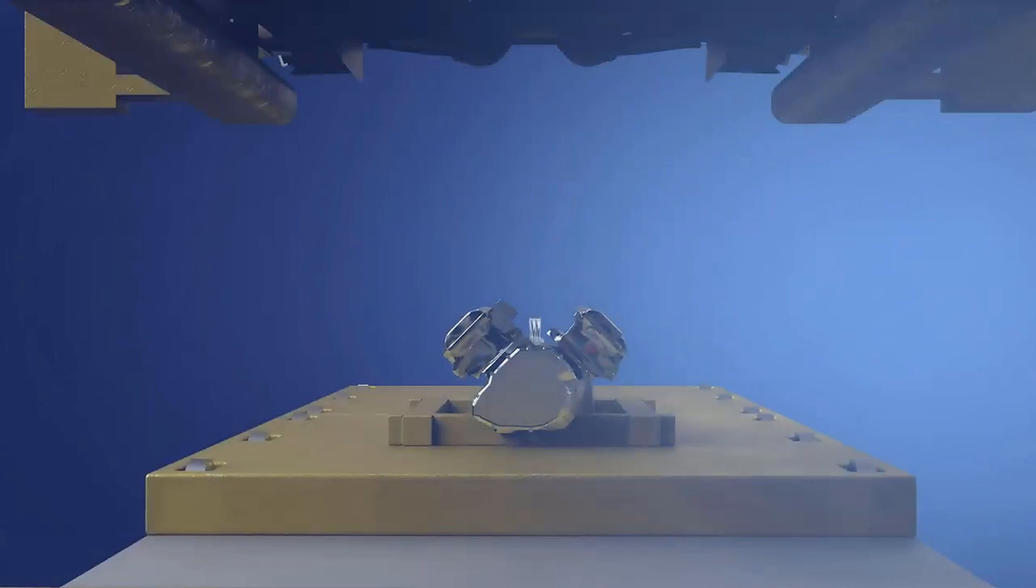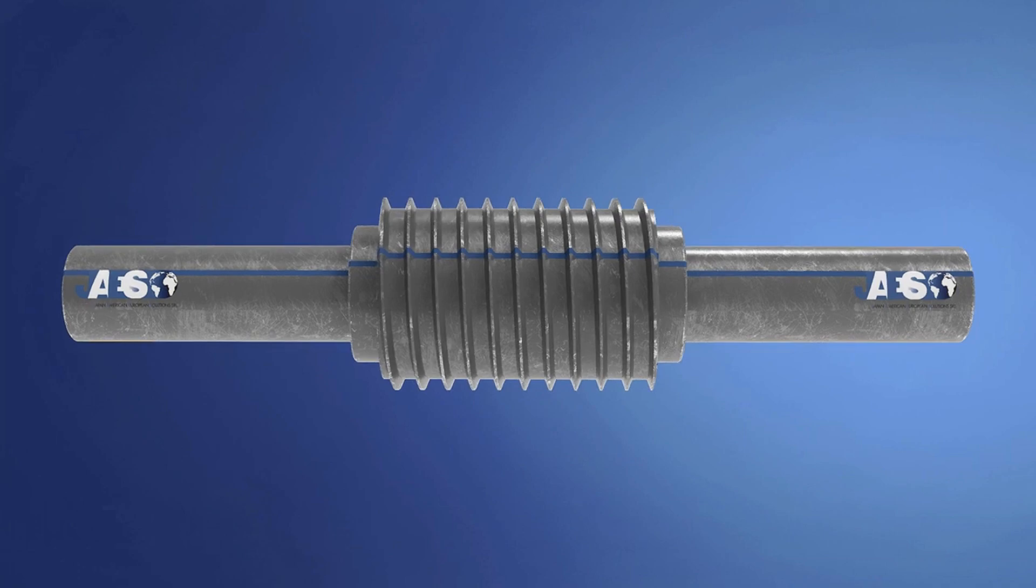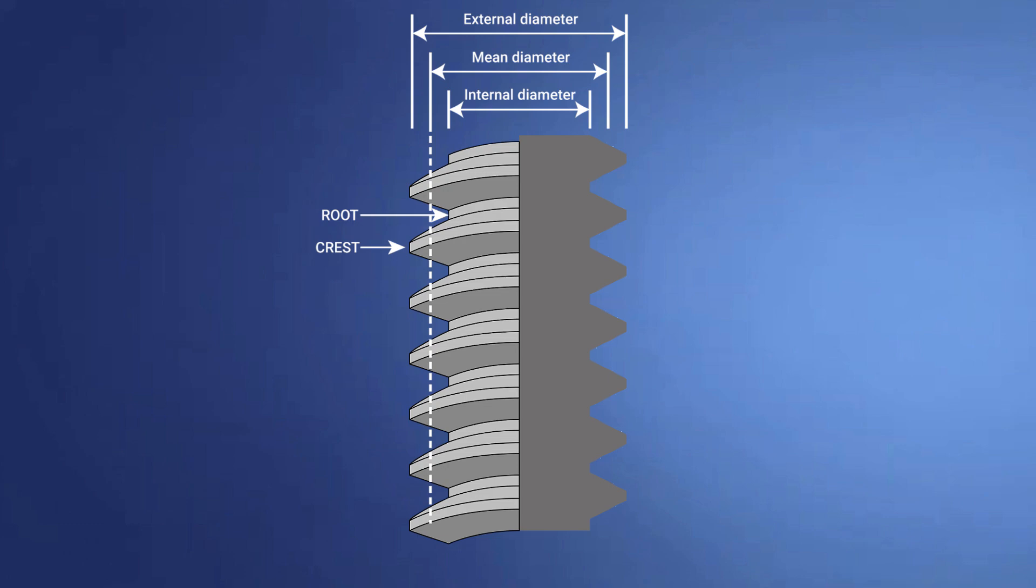A worm screw is the essential feature of a screw jack. Here, we can distinguish its main diameters, the thread elements, the pitch which is the distance between two threads, and the thread angle.